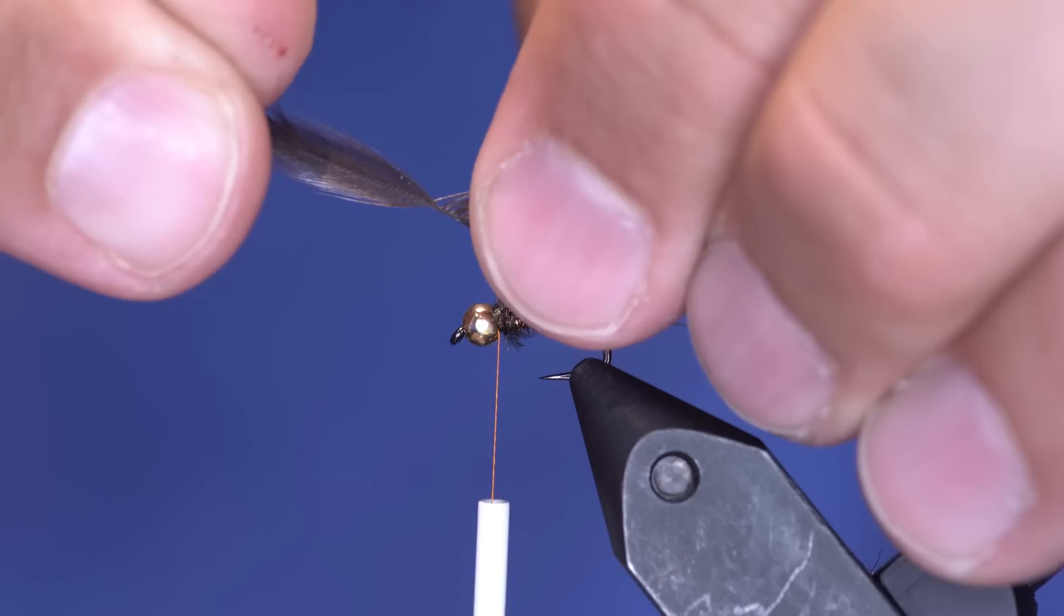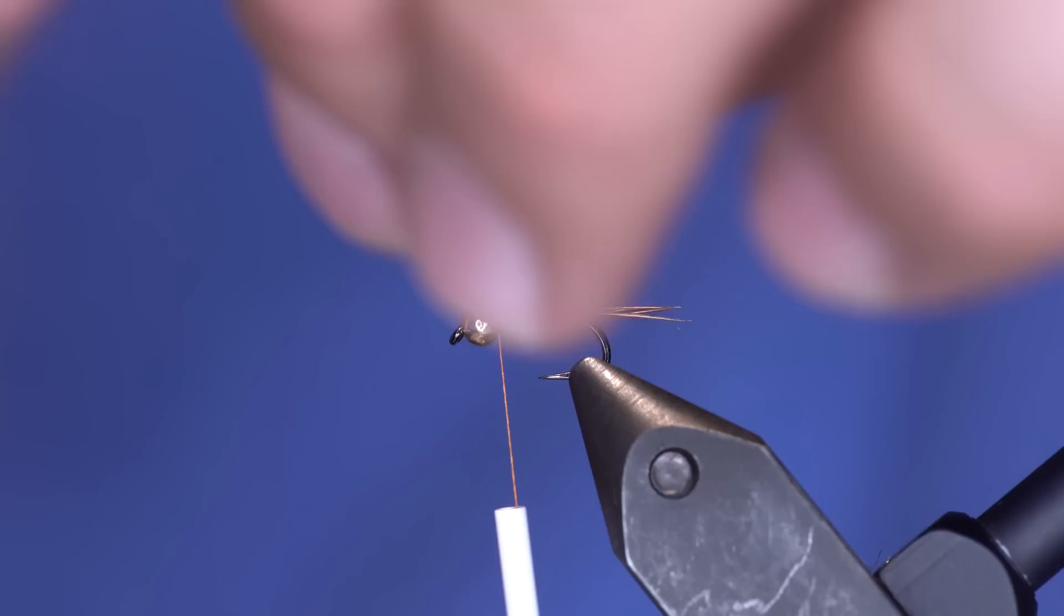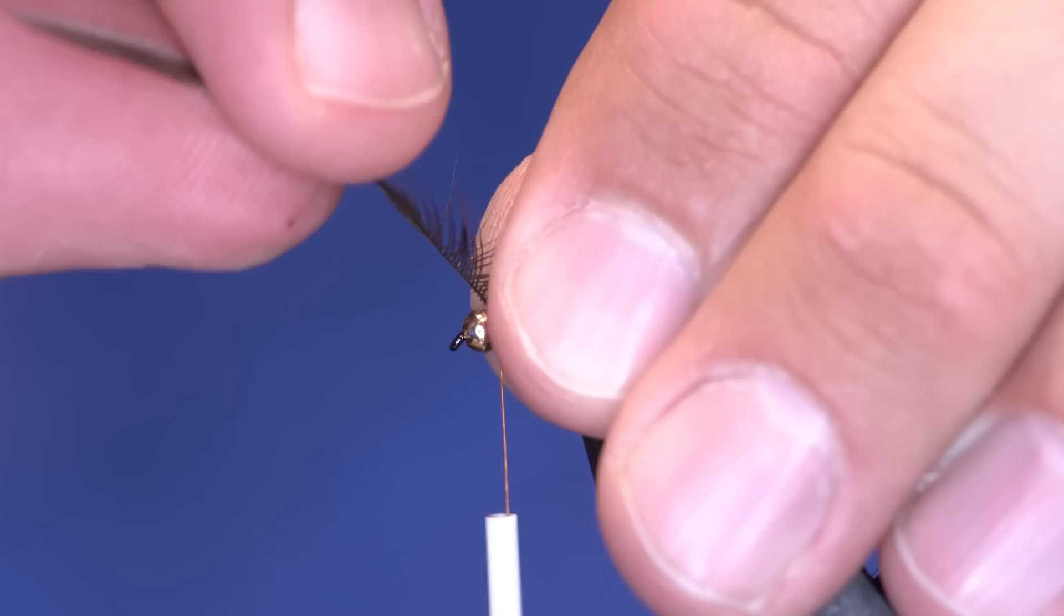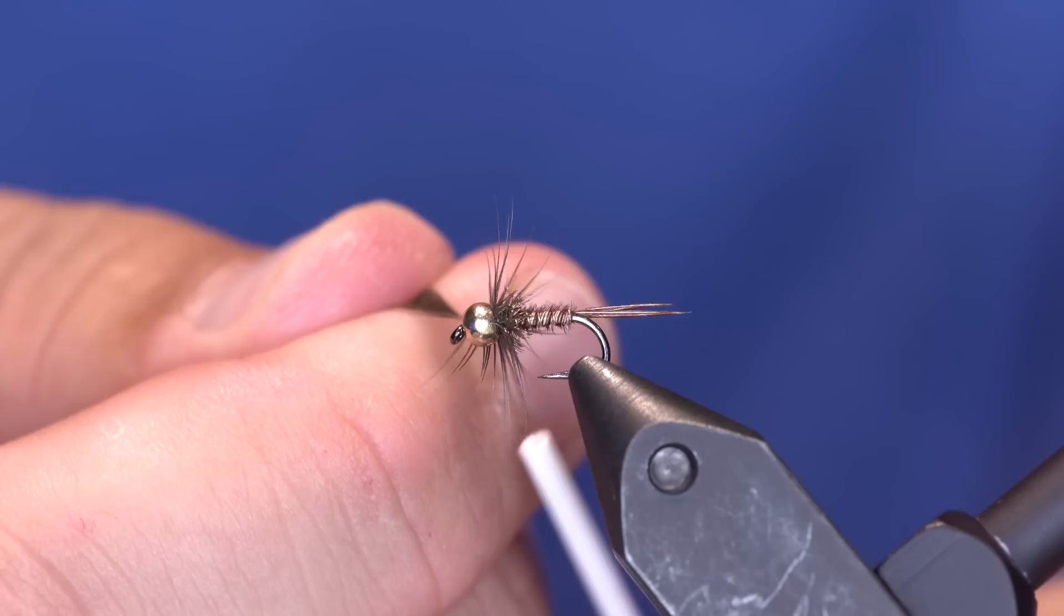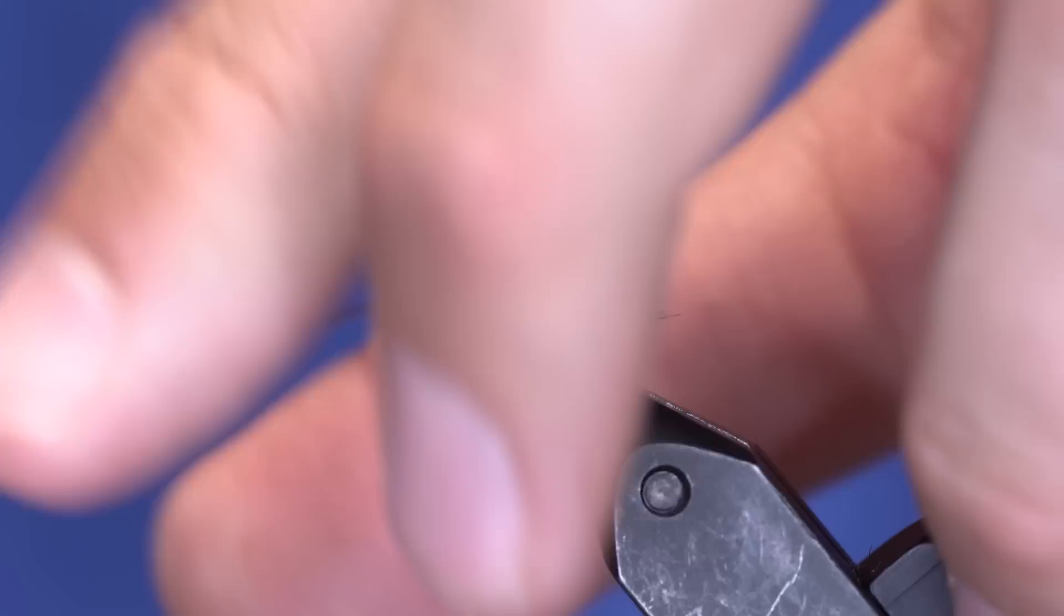And even if it doesn't look like it's doing it, once you start to wrap it will lay down nicely. So I've got it. And these are long enough fibers on this that I don't really need to use hackle pliers. And I'm going to manipulate it with my fingers a little bit. And just do one and a half turns of this.